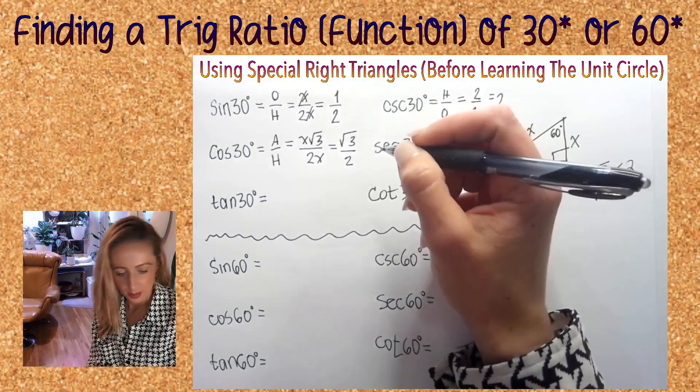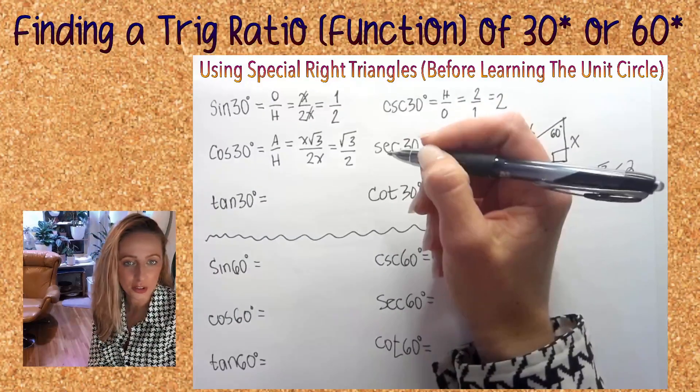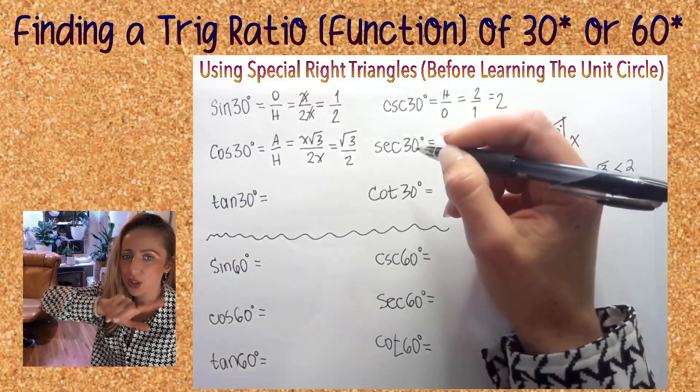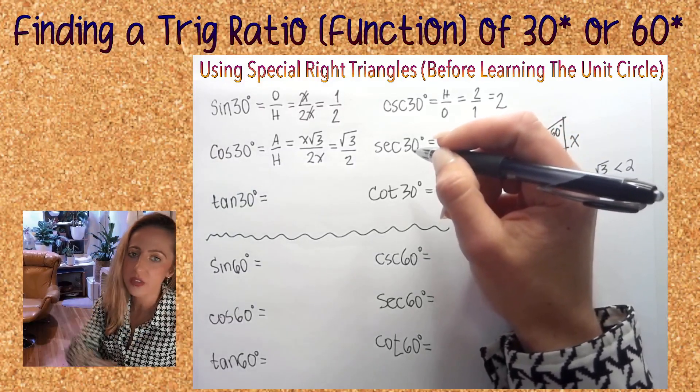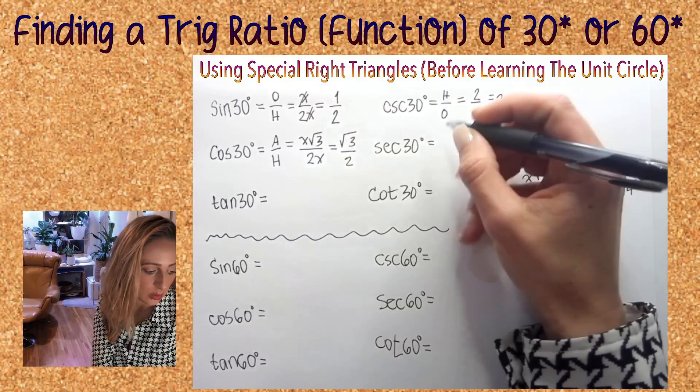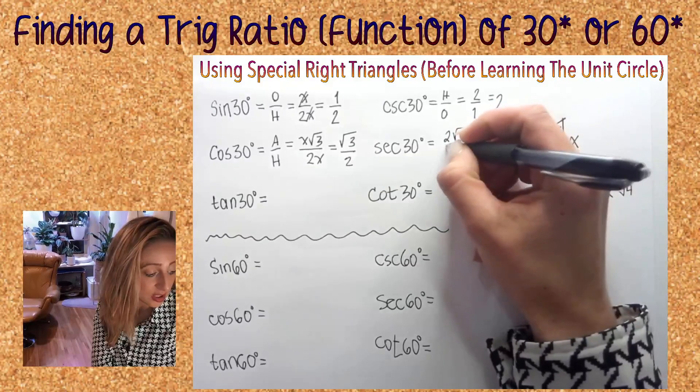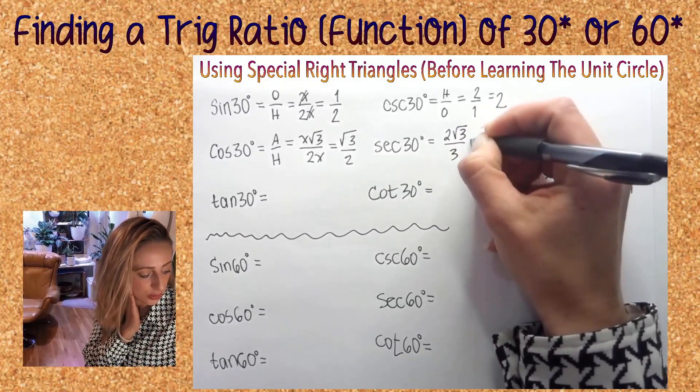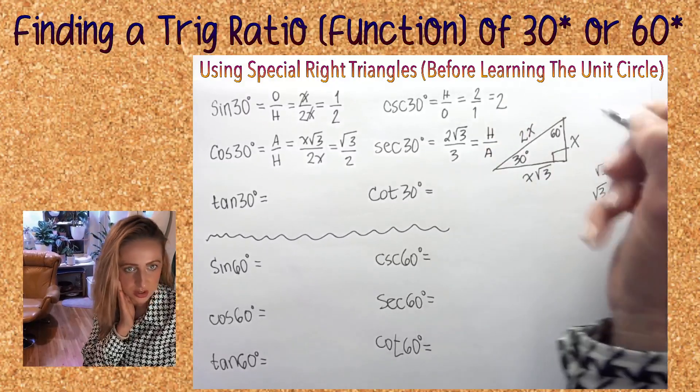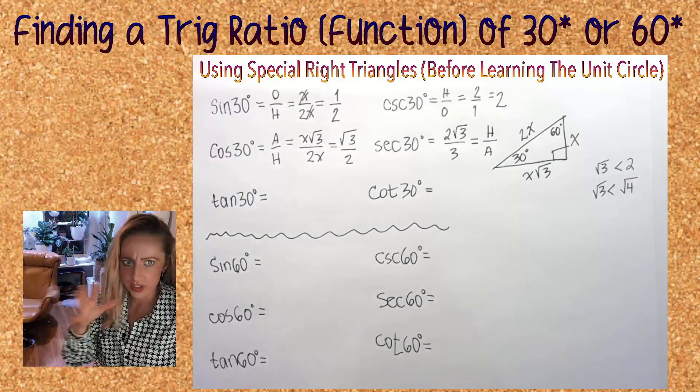The secant is a reciprocal. You should have memorized the reciprocal of radical 3 over 2, you shouldn't even need to do work. 2 root 3 over 3, hypotenuse over adjacent. A lot of you messed this up, you stick your threes and your twos in all the wrong places. You need to make some flashcards, my friends.